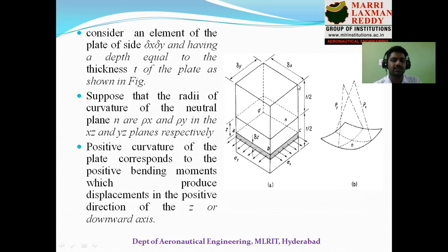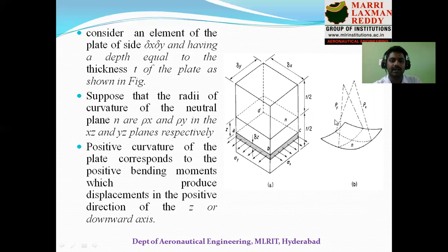Let δx be the plate dimension in the x-axis and δy in the y-axis. When Mx is acted alone on the two edges, the plate takes a curvature ρx. Similarly, when My is applied alone, it produces curvature ρy. When both Mx and My act simultaneously, both curvatures result, and these curvatures are important as they relate to the deflection of the plate.